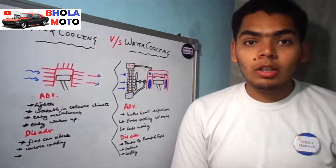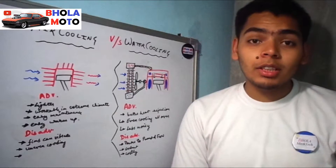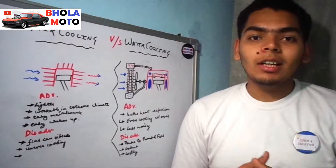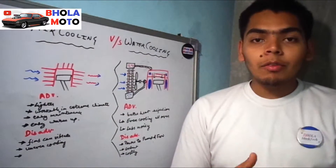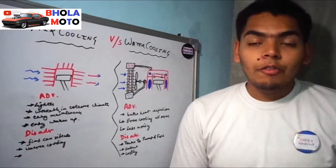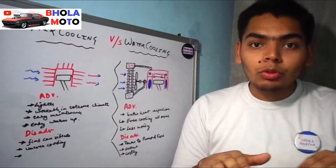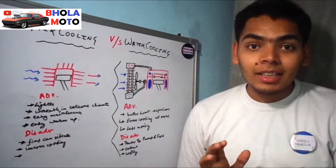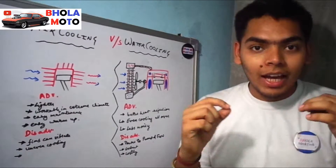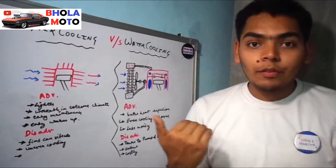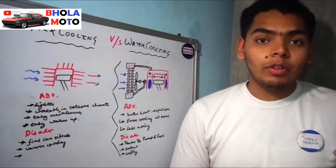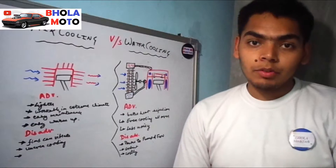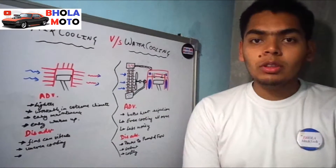Starting with the air-cooled engine: previously, before liquid cooling was introduced, engines used to be cooled by passing air through them. When air comes in contact with the engine it rejects the heat. The key point is that they use fins — extruded plate-like structures. These fins reject heat because they increase the surface area. As surface area increases, the contact area of air increases, allowing more convection to take place.